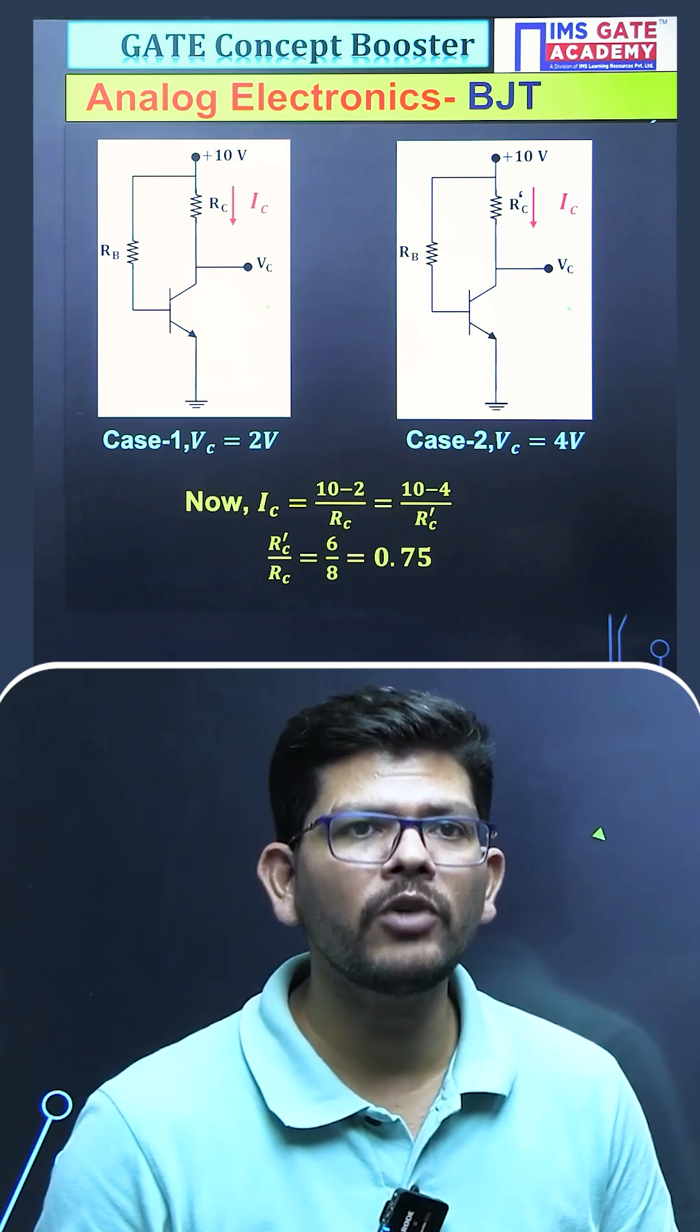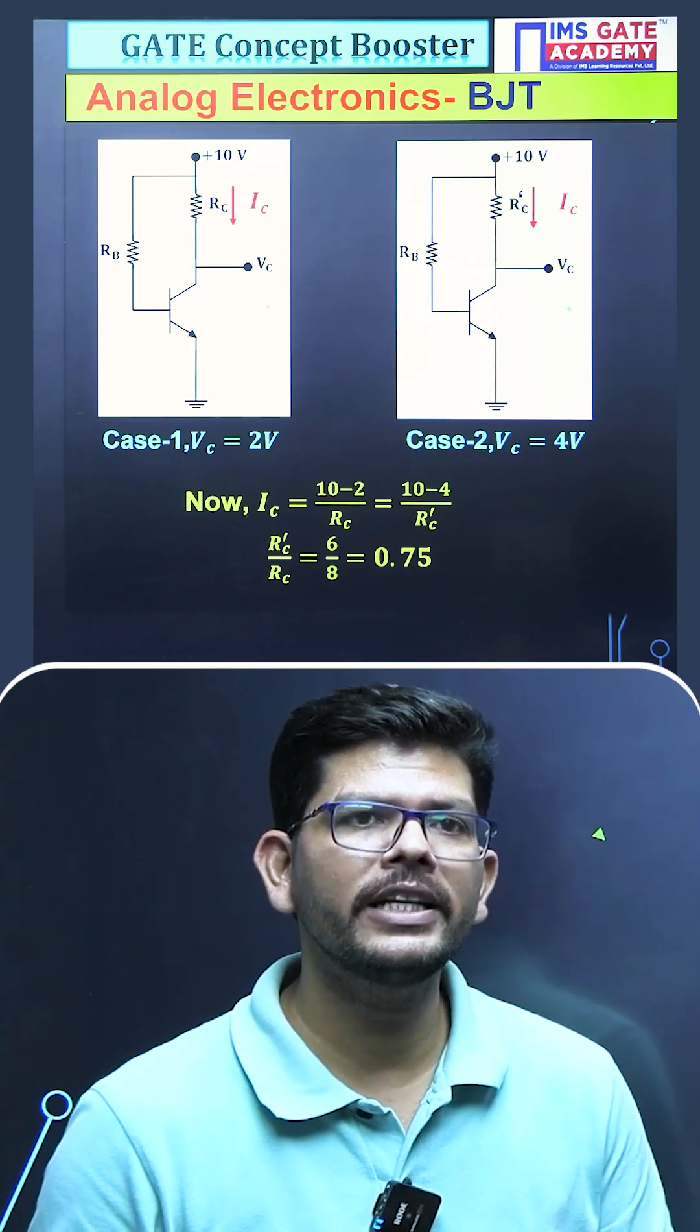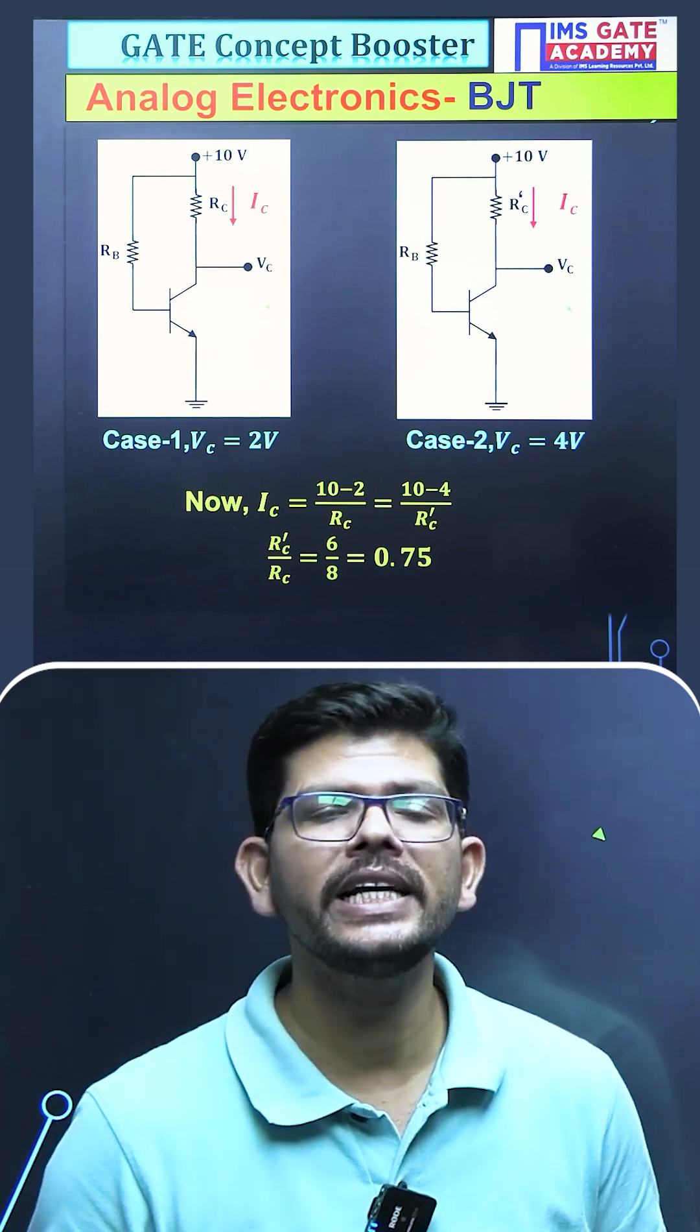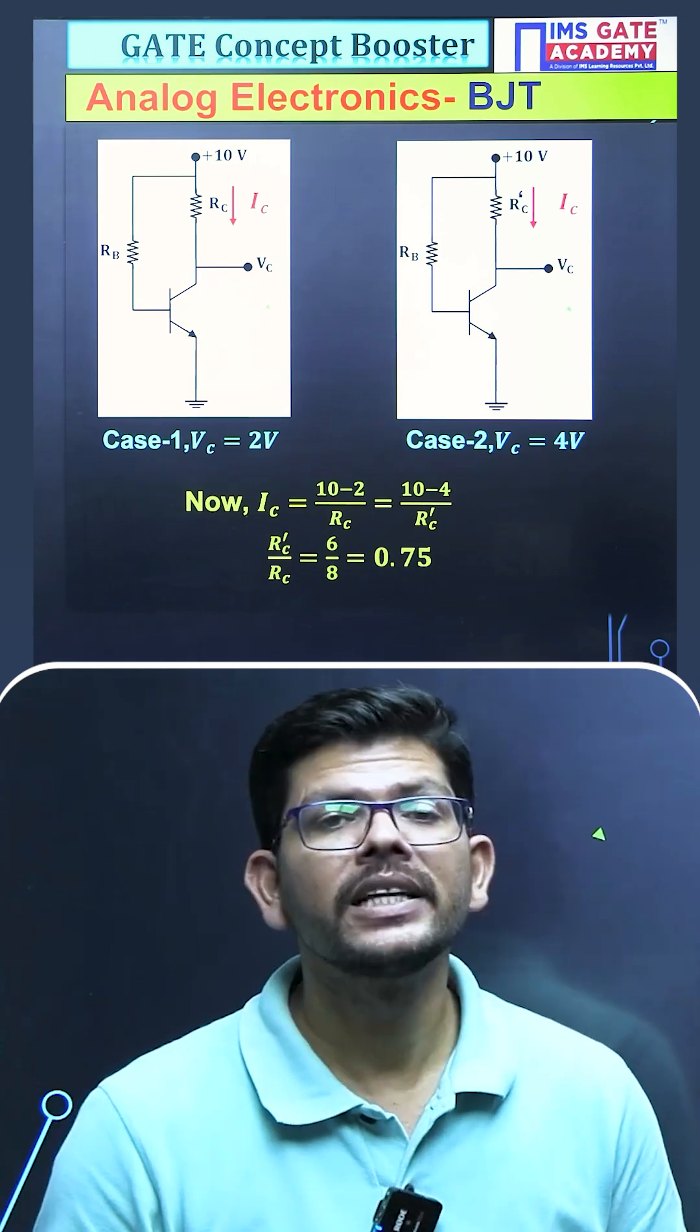then what you will get is the current IC equals to (10-2) upon RC or (10-4) upon RC dash. You can easily get the ratio of RC dash to RC which will be 0.75. This is how you can solve this question easily.